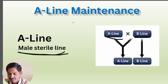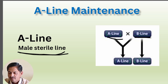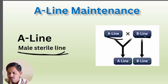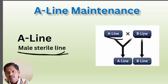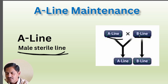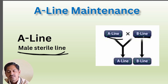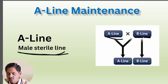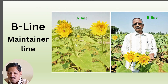For B line maintenance: just grow the seeds of B line in isolation and allow them to intermix among themselves, because B line is a fertile line — it can self-pollinate. We don't need cross-pollination or human interference; naturally we just grow the seeds of B line.